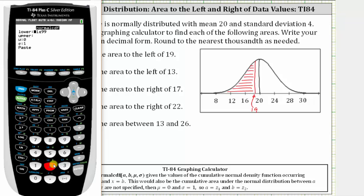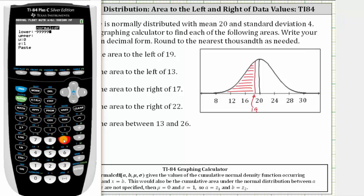Now because we're looking for the area to the left, we are going to have to exaggerate the left bound or lower bound. Notice by default, here we have negative one E 99, which means negative one times 10 raised to the power of 99, which works just fine. But we can also just use something like negative 999999, and that works as well. And we press enter.